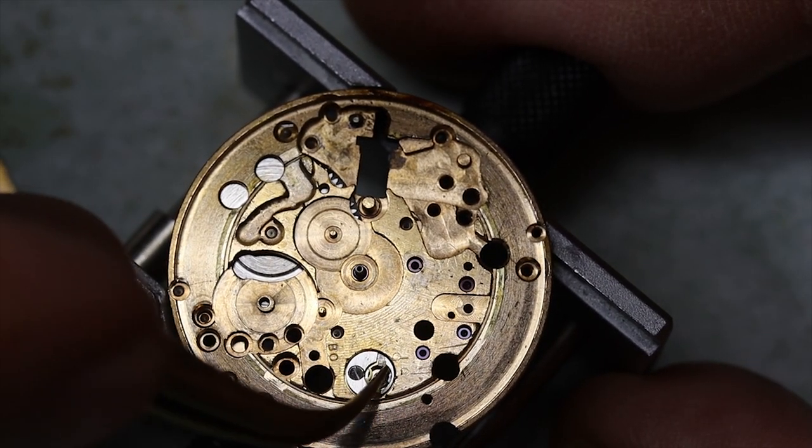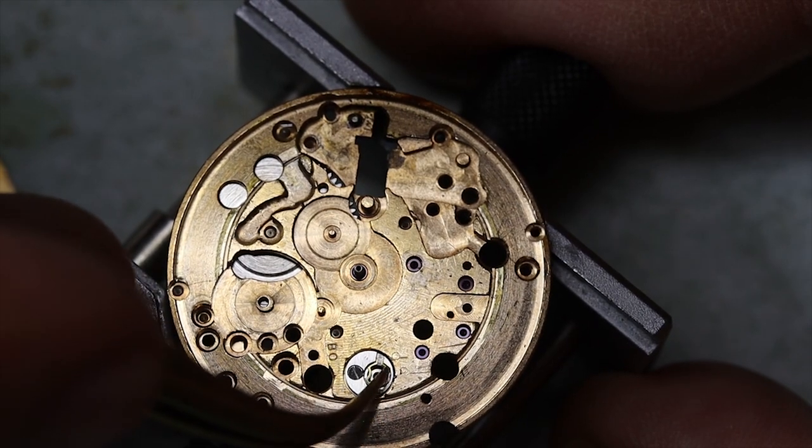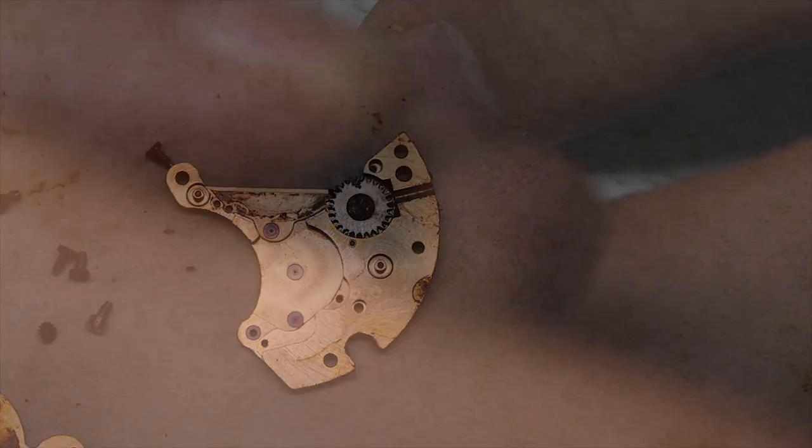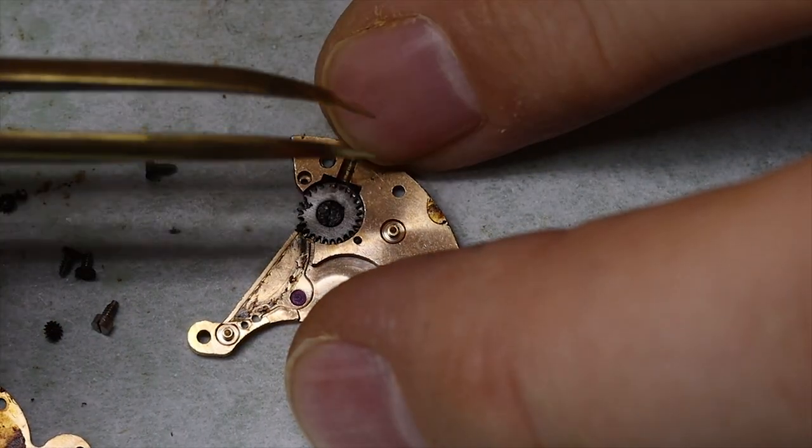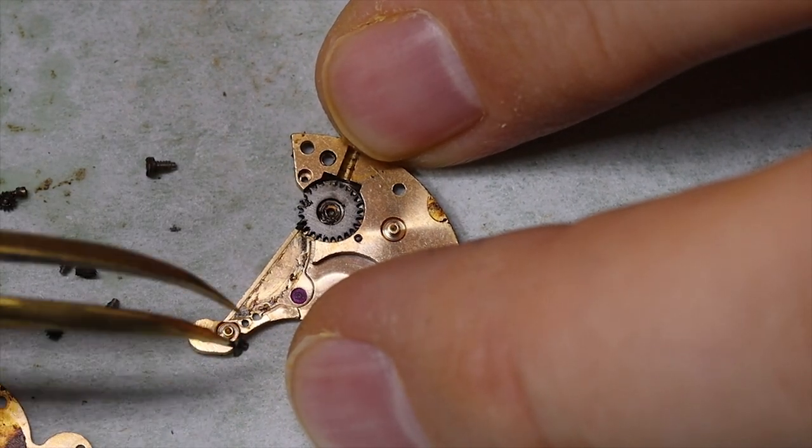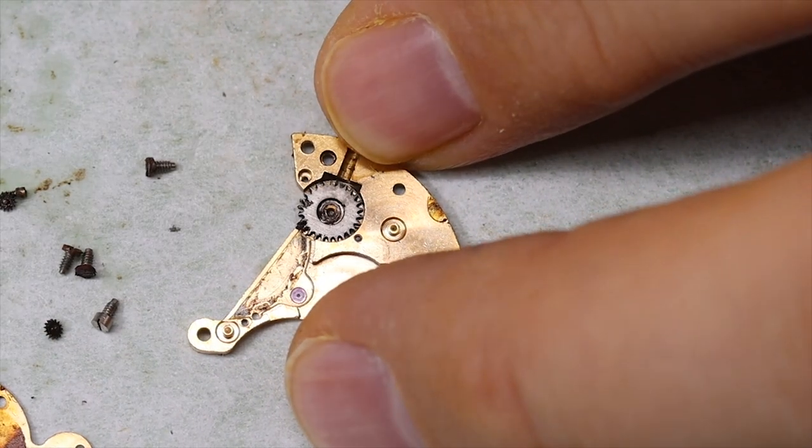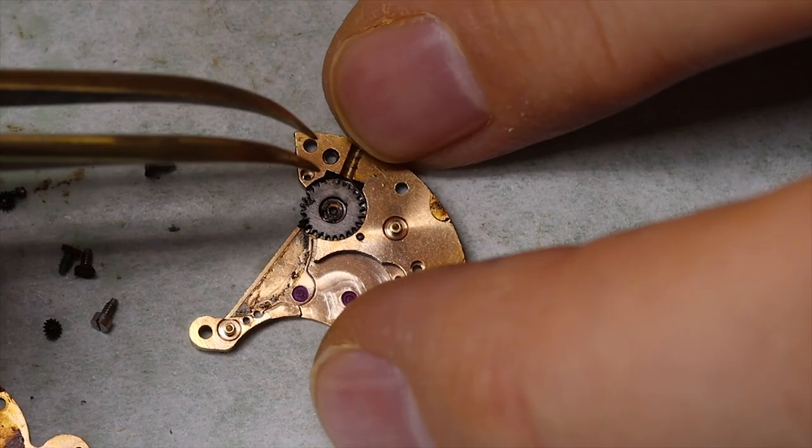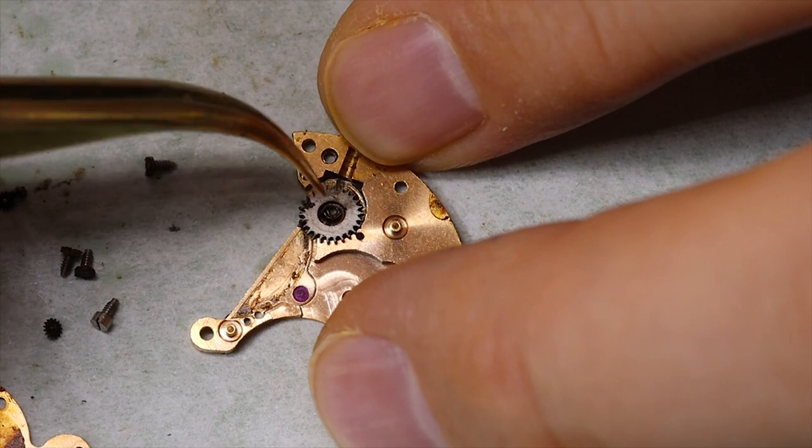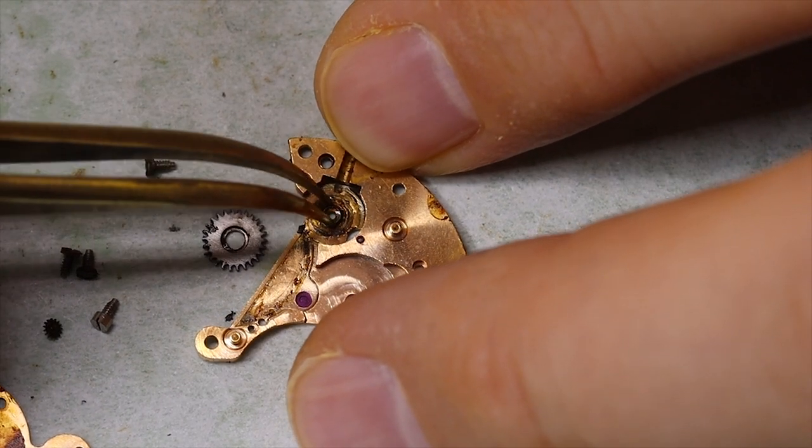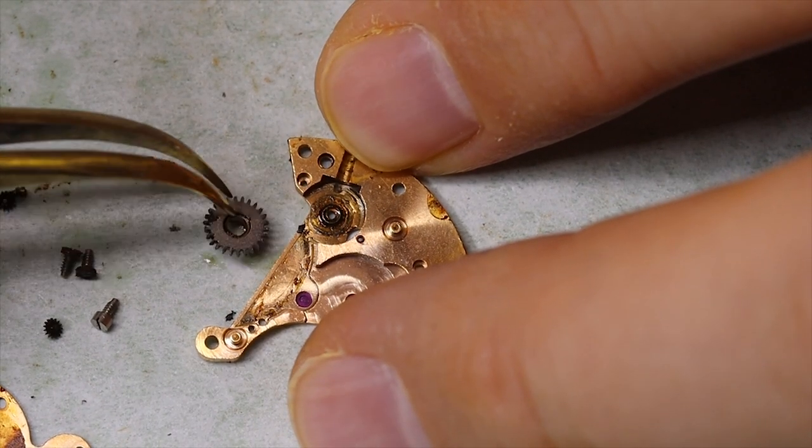All right, so while we're waiting for the screws to work a little bit more, we can look at the train bridge. You can see that the crown wheel is underneath the train bridge. It's a nice solution that was pretty popular back then. And we see there's quite a lot of rust. There should actually be a shim around this post, but it's pretty stuck. We're going to clean it a little bit first and then see if we get it off.